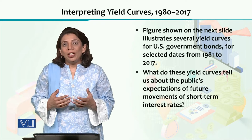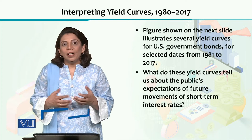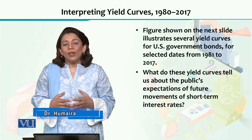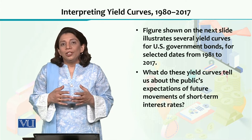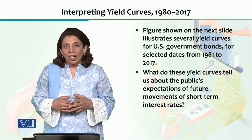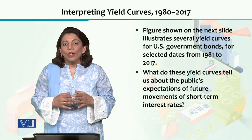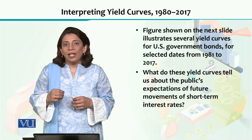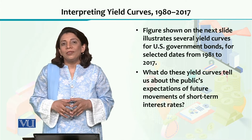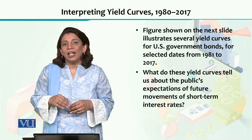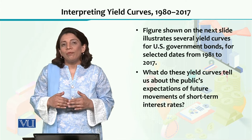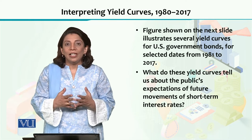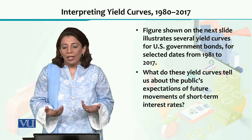We have studied the different types of yield curves and discussed them using real-life data. For illustration, I am going to take some yield curves developed using real-time financial data from 1980 to 2017. These yield curves were drawn at different time periods, and you can see there are yield curves sloping downwards, horizontal straight lines, or moving upwards — with sharp or gradual upward movement.